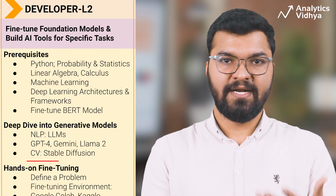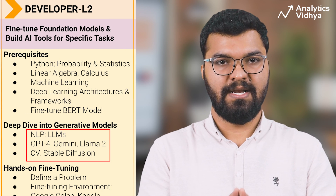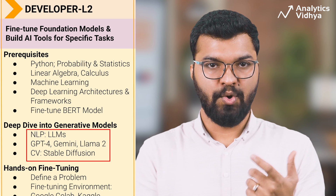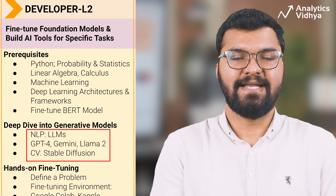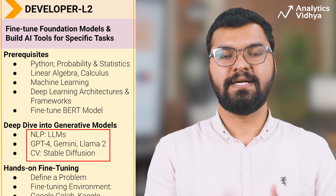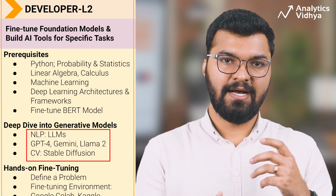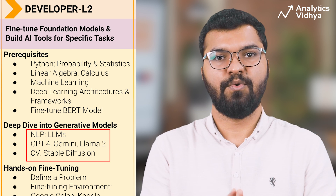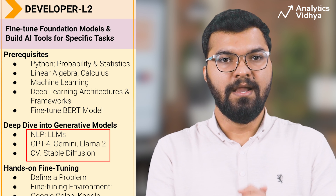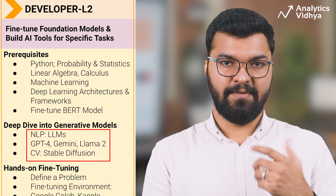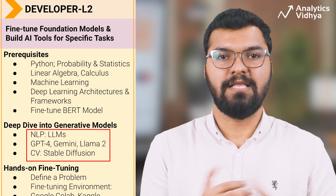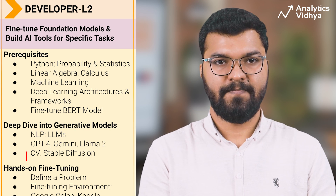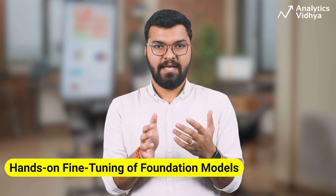At developer level two, dive deeper into LLMs or stable diffusion models depending on your area of interest. If you are inclined towards NLP, explore popular large language models like GPT-4, Gemini Pro, or open-source models like LLaMA 2 — understand their architectures, training processes, and text generation mechanisms. If you are more interested in computer vision, focus on foundational models in that space like stable diffusion models, their different types, architectures, and training processes. Participate in online discussions and forums throughout.